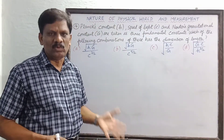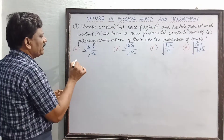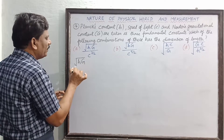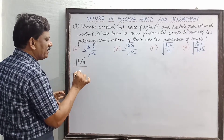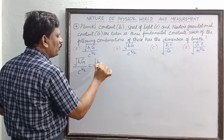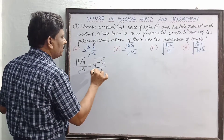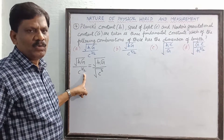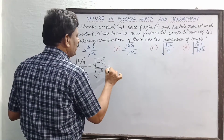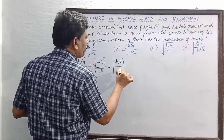We have to use a random trial-and-error method. I will start with Option A: square root of H times G divided by C to the power 3/2. This can also be written as square root of H times G divided by the square root of C cubed, since C^(3/2) = (C³)^(1/2). So Option A is √(HG / C³) under a square root.